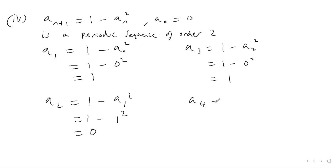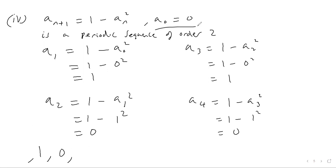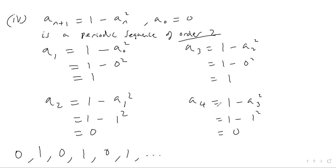Continuing, a3 equals one minus a2 squared, which is one minus zero squared, giving one again. And a4 equals one minus a3 squared, which is one minus one squared, giving zero. So starting from a0, the sequence is zero, one, zero, one, zero, one, and so on. This is a periodic sequence of order two, since it repeats after every two terms. That's a brief overview of periodic sequences.